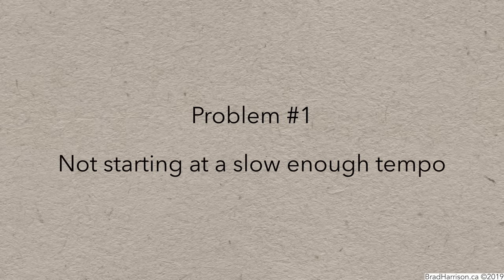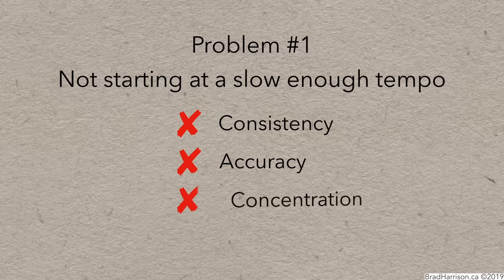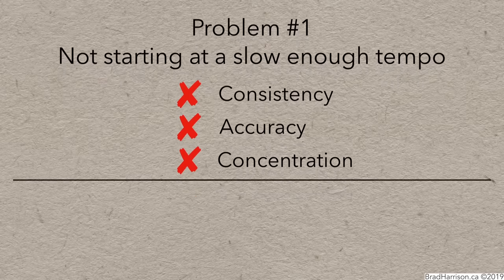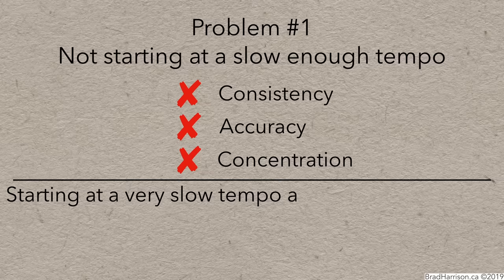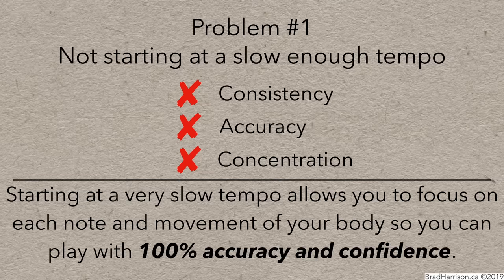There are two common problems. The first is not starting at a slow enough tempo. Many musicians practice at a sort of medium tempo that isn't slow enough to allow the level of consistency, accuracy, and concentration necessary to make huge long-term gains. It's not hard to understand why people resist going so slow. It can be kind of boring. But starting at a very slow tempo allows you to focus on each note and movement of your body so you can play with 100% accuracy and confidence.